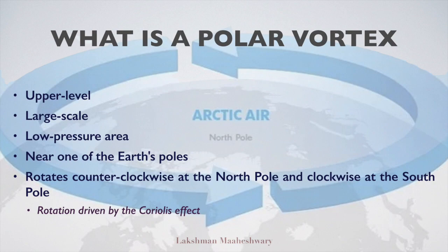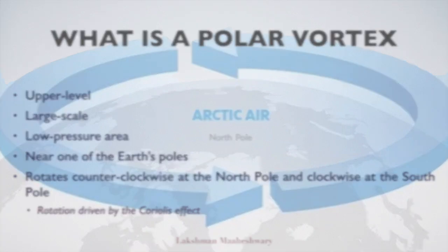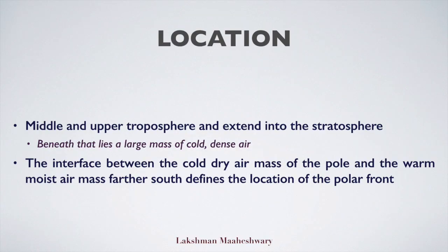The rotation is driven by the Coriolis effect. Talking about the location, the bases of the two polar vortices are located in the middle and upper troposphere and extend into the stratosphere. Beneath that lies a large mass of cold, dense air. The interface between the cold dry air mass of the pole and the warm moist air mass further south defines the location of the polar front.